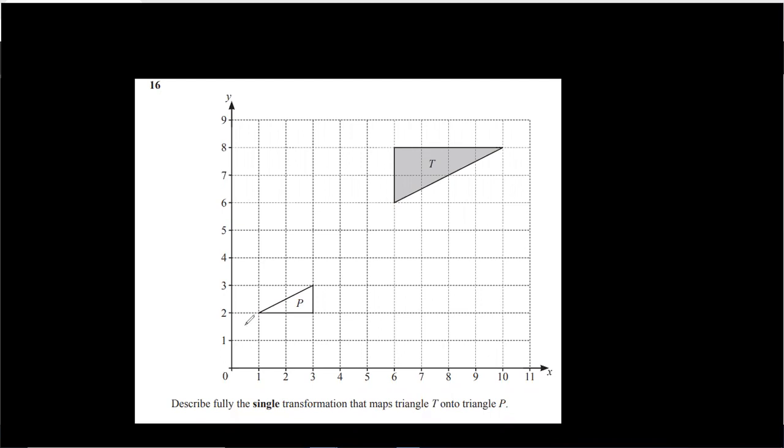In this question, examiner says to us, describe fully single transformation that maps triangle T onto triangle P. It means this triangle is object, and this triangle is image.